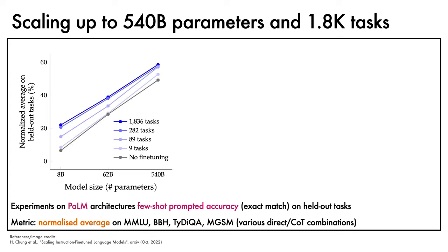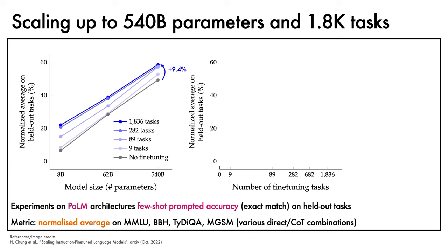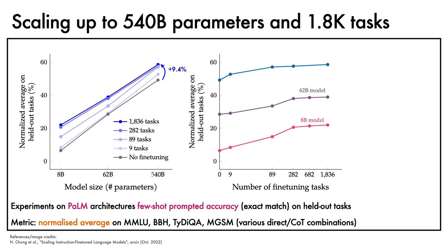Here are the results. We see that instruction fine-tuning, moving from grey to dark blue, brings significant gains at all scales, with a particularly notable 9.4% gain on the 540 billion-parameter PaLM model. We can visualise this slightly differently to understand the effect of number of fine-tuning tasks by plotting the number of fine-tuning tasks on the x-axis. We observe that up until 282 tasks, there were fairly major gains from increasing the number of fine-tuning tasks, but after this, the gains become minor.